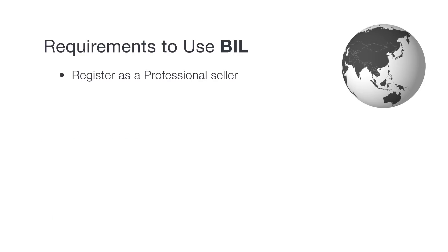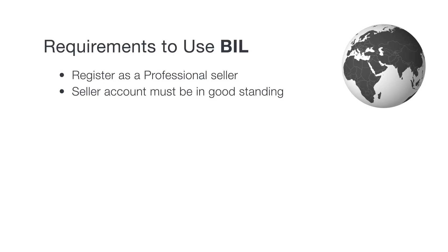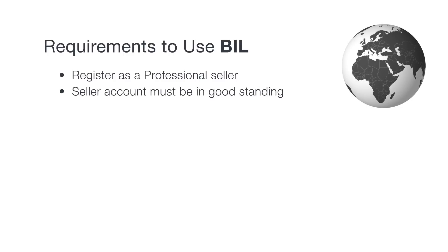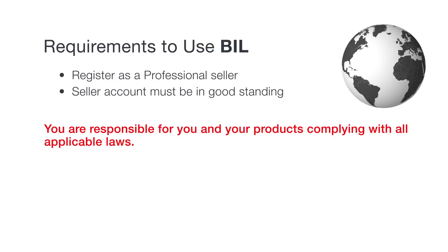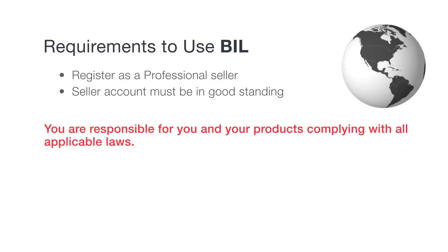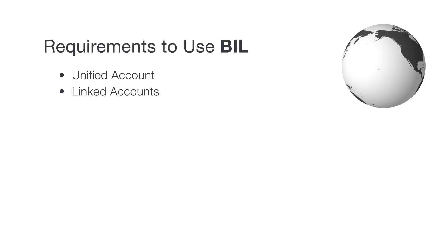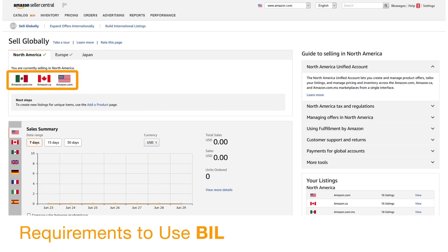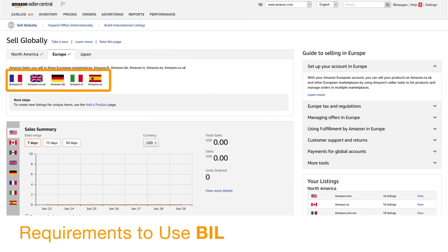First, you'll need to be registered as a professional seller in all the marketplaces for which you want to use BIL. Your account also needs to be in good standing in the marketplaces you want to connect. Remember, you are solely responsible for ensuring you and your products comply with all applicable laws of both source and target marketplaces. Then you'll need to verify if you have a unified account or linked accounts. Sellers with a unified account can use BIL to add and manage offers in the same region. Sellers with a linked account can use BIL to add offers and synchronize prices across regions.